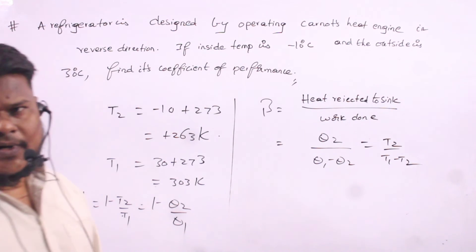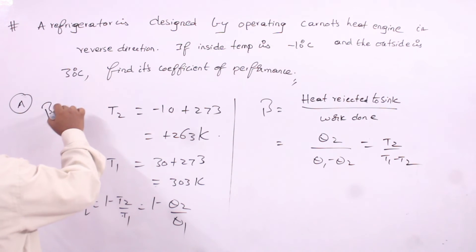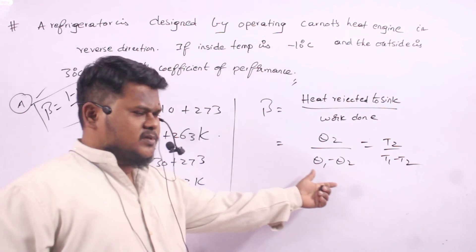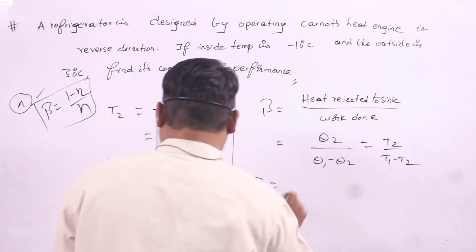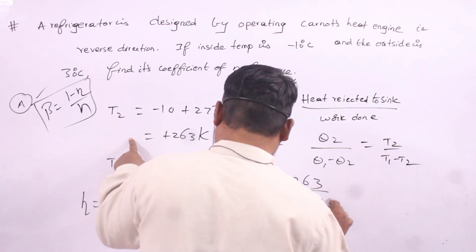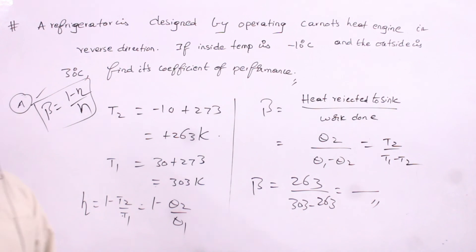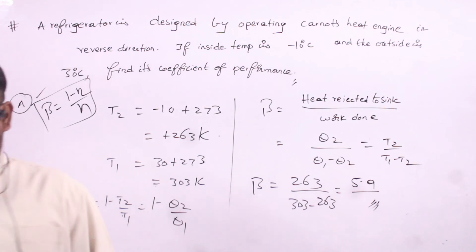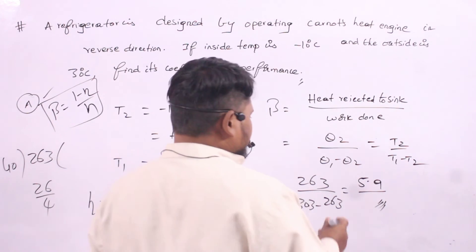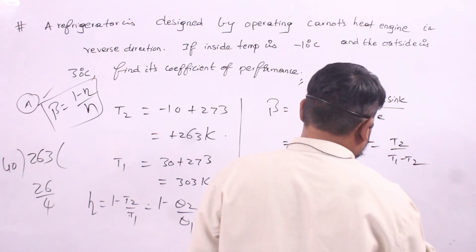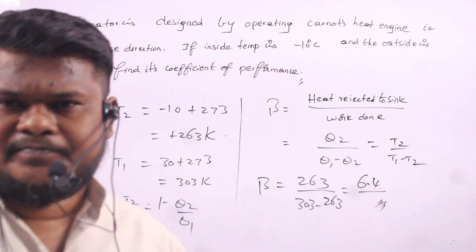Therefore beta can be written simply as T2 divided by (T1 minus T2). Substituting the values: T2 is 263 and T1 minus T2 is 303 minus 263, which is 40. So beta equals 263 divided by 40, which gives approximately 6.575.